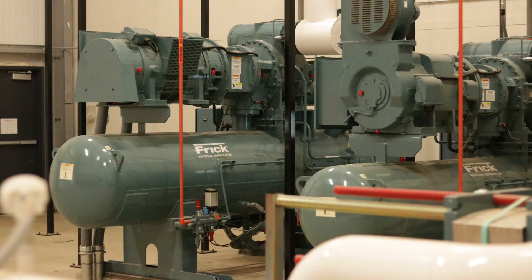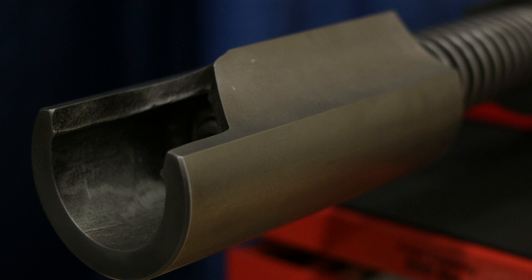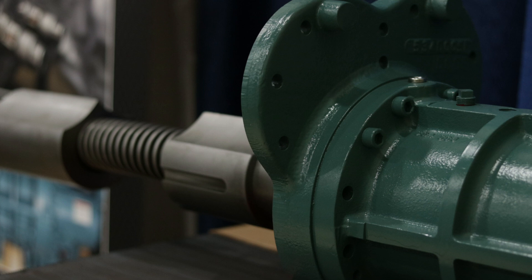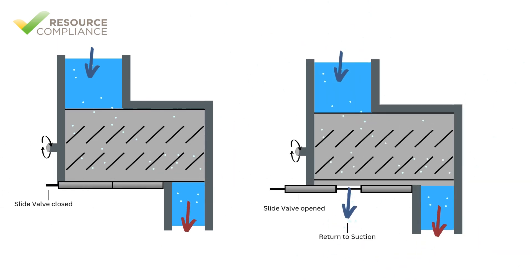In screw compressors, capacity control is typically achieved by employing what is called a slide valve. The slide valve is located between the rotors and consists of a sliding member that covers an opening that allows gas to be vented back to suction. During part load conditions, the slide will move to uncover the opening, which will decrease the amount of vapor that is compressed.